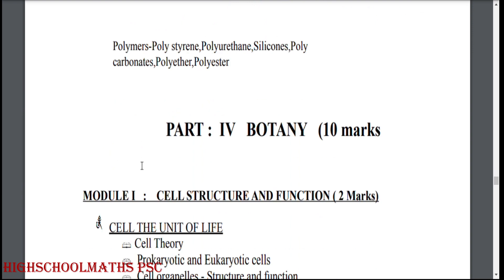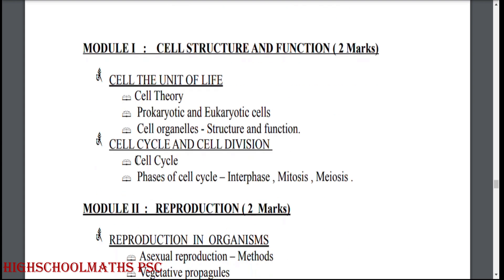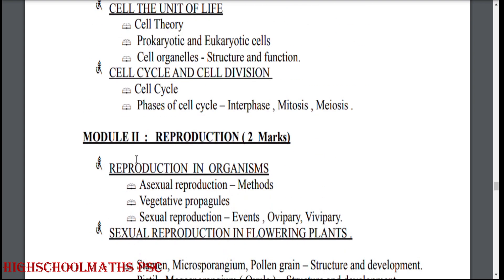Part 4, Botany, path marks. Module 1: Cell structure and function. Cell — the unit of life. Cell theory. Prokaryotic and eukaryotic cells. Cell organelles: structure and function. Cell cycle and cell division: phases of cell cycle, interphase, mitosis, meiosis.